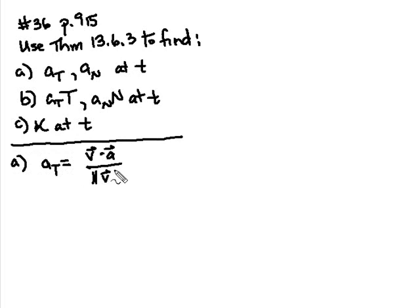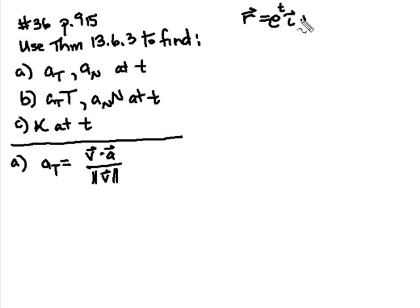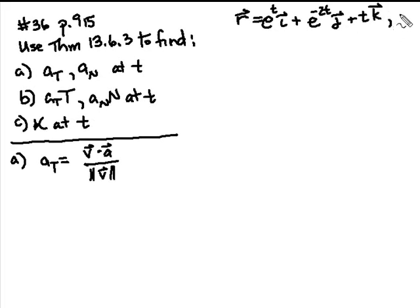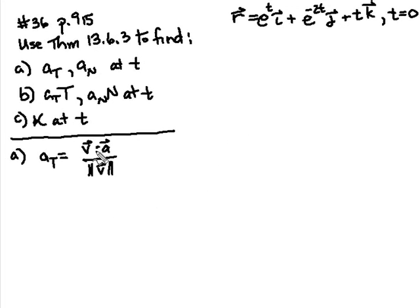I forgot to give us our function. The function we're given is R equals e to the T times i, plus e to the negative 2T times j, plus T times k, and the value of T that we're looking at is T equals zero. Coming back down, we need the dot product of V and A, which means we need V and A.